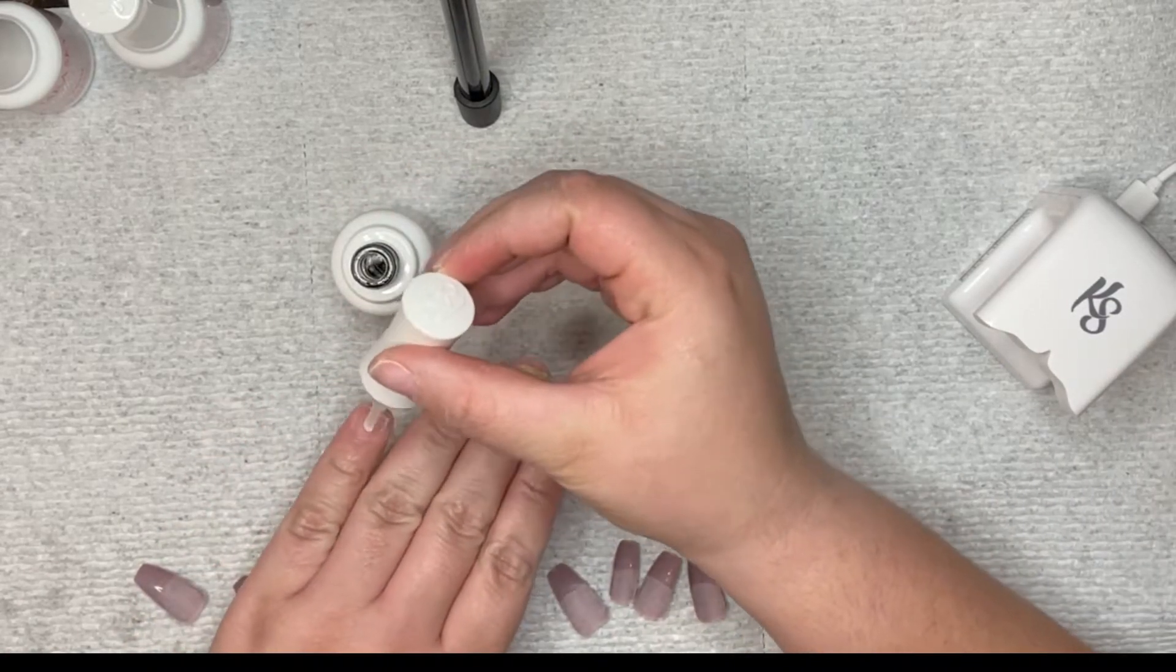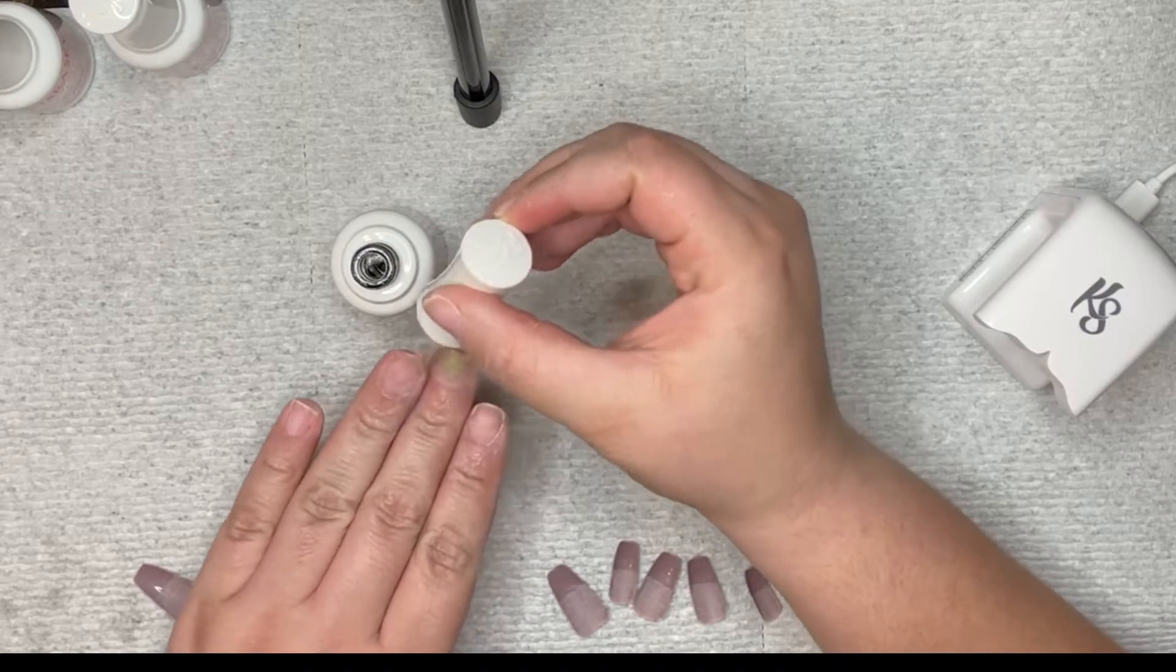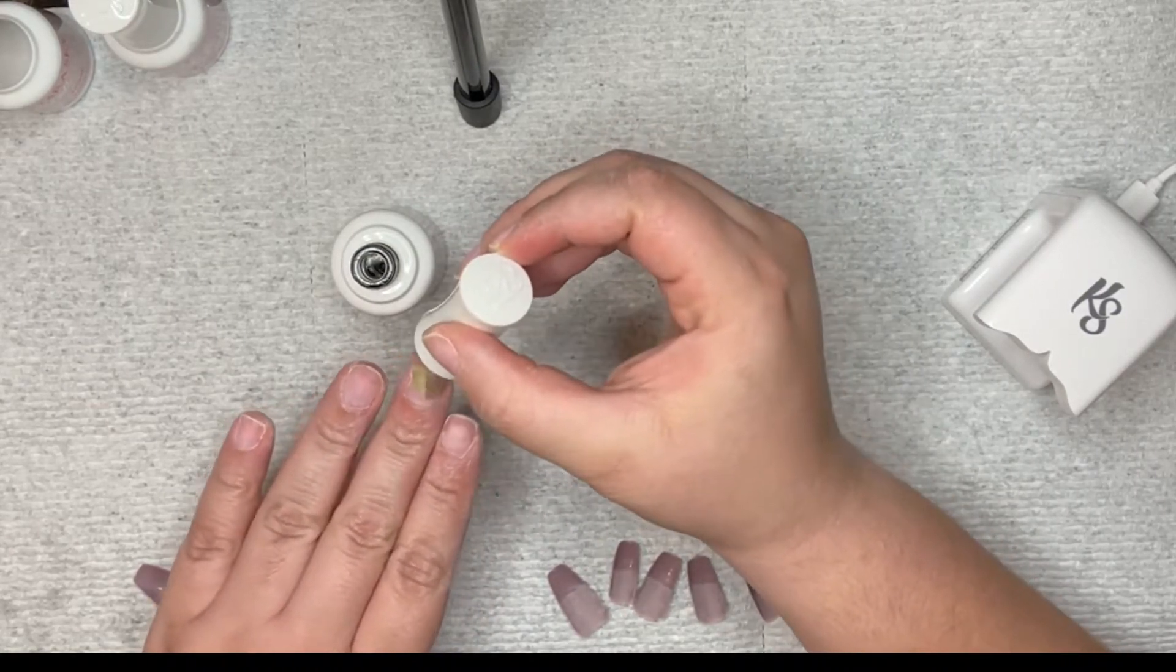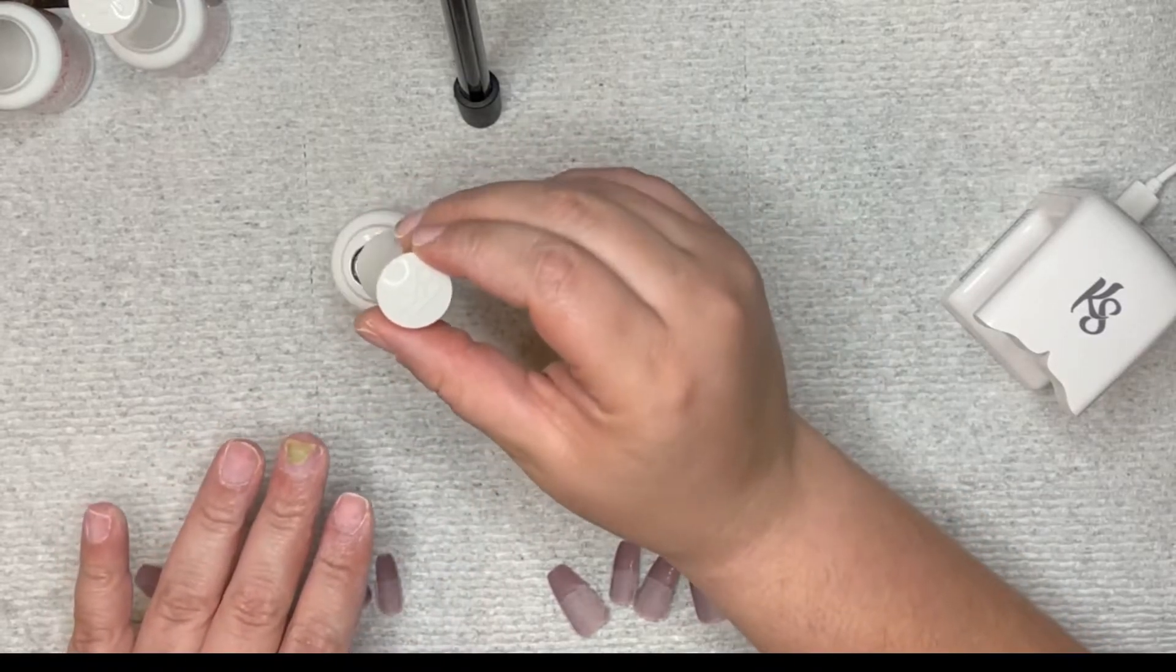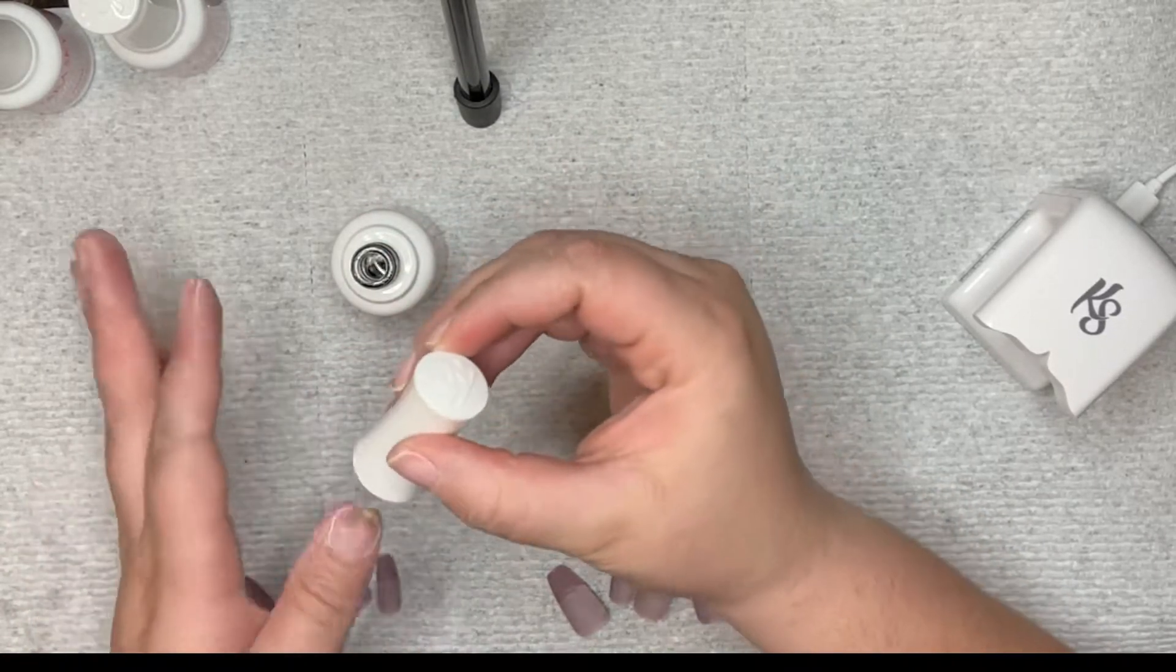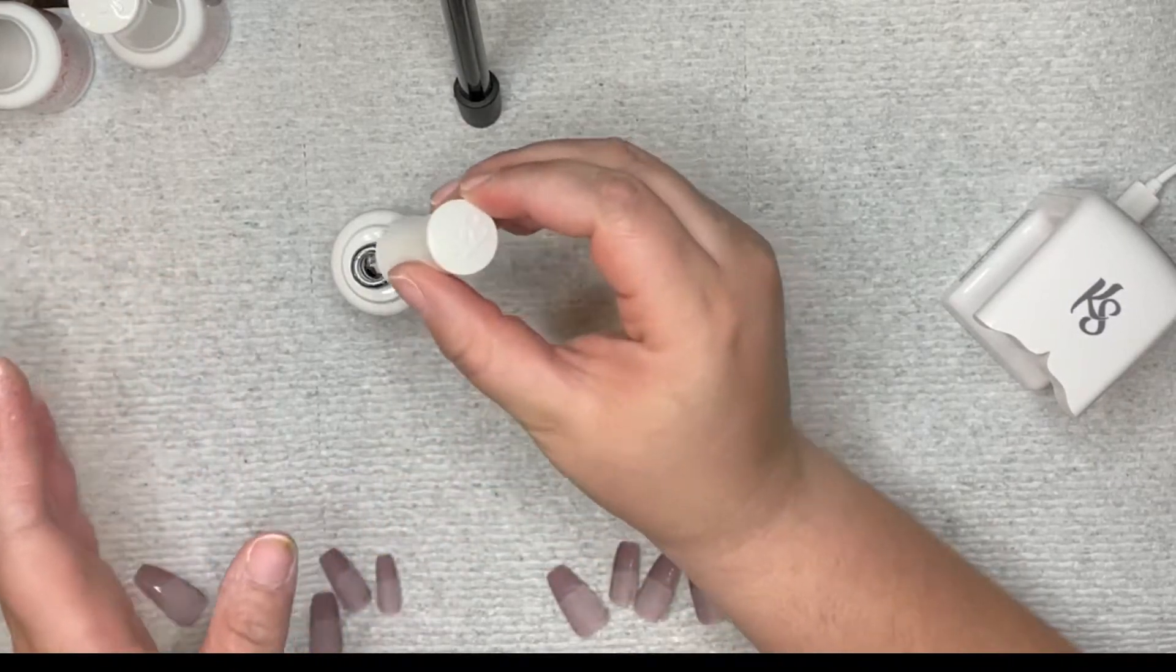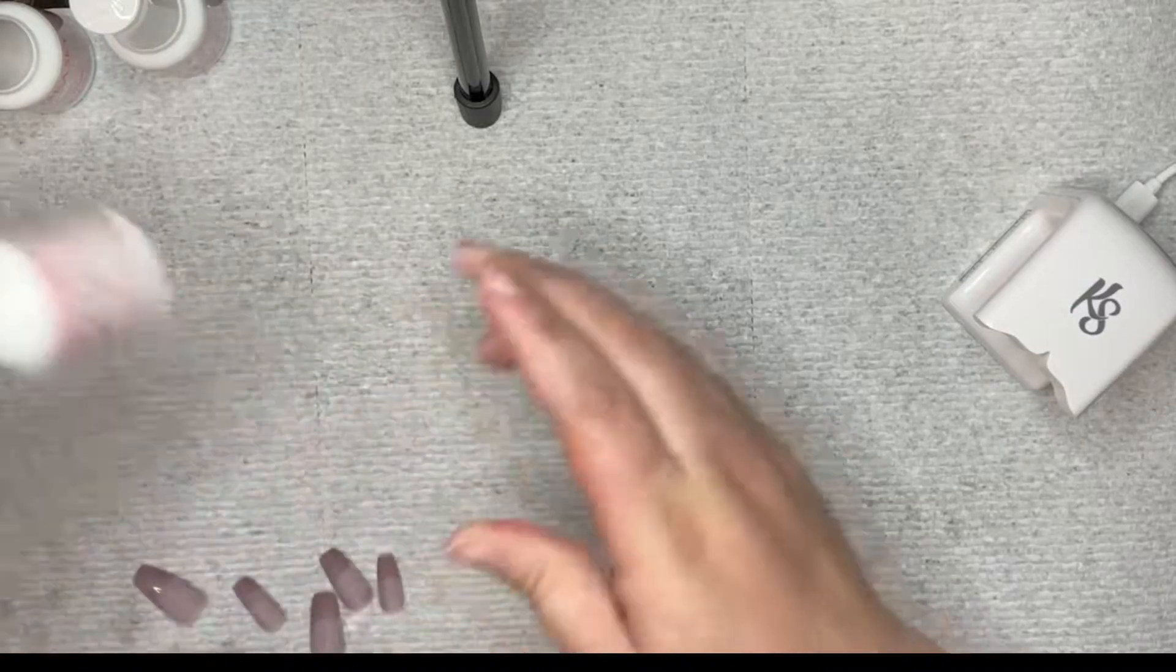After you buff your nails, your natural nails, you want to use the prep and the primer from either the Kiara Sky Builder Gel set or whatever prep and primer that you might have. However, I am using the gel from the Jelly Tips set. So it is best to use the prep and primer that comes with it.